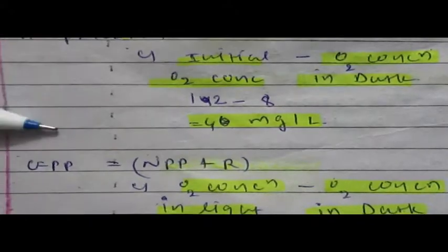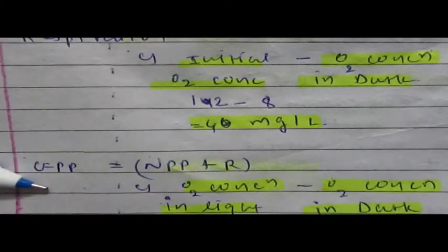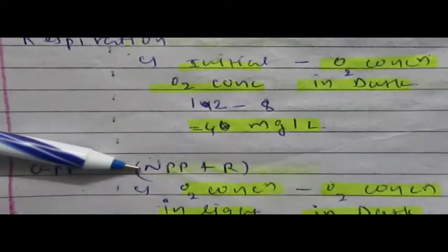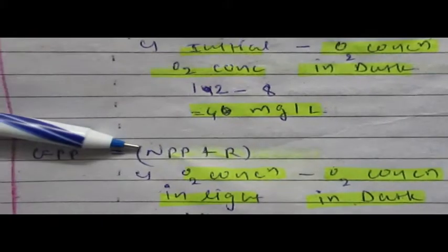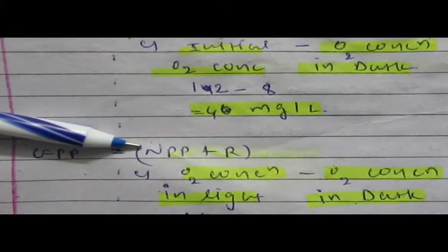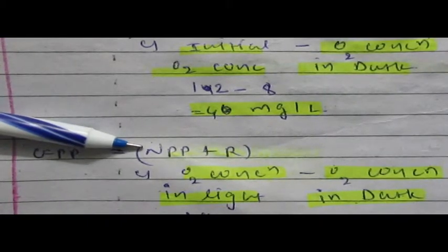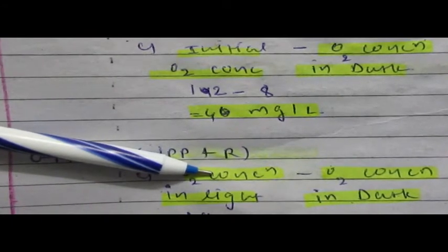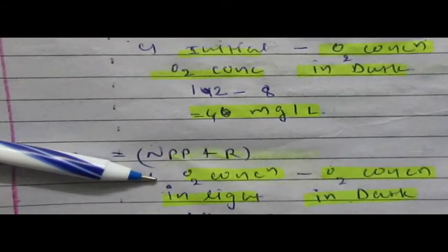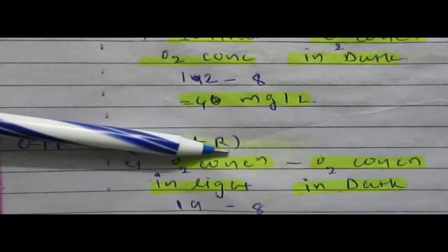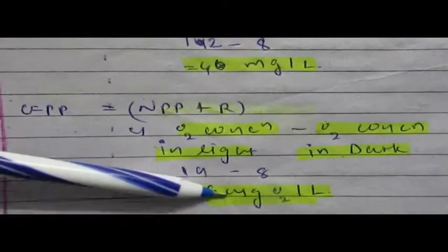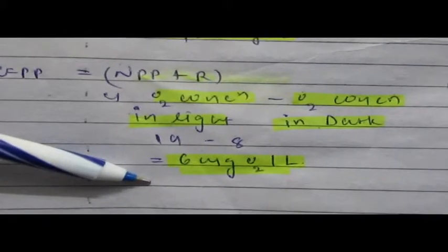To calculate GPP — gross primary production — which equals NPP plus respiration: the O2 concentration in the light bottle minus the O2 concentration in the dark bottle gives us GPP. So 14 − 8 = 6 milligrams per liter. That is the gross primary production.